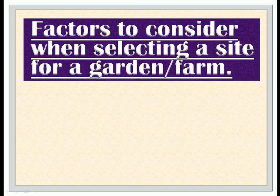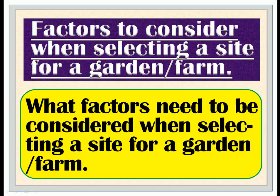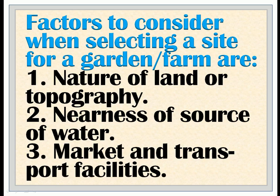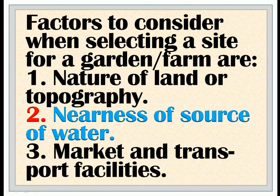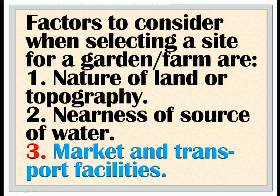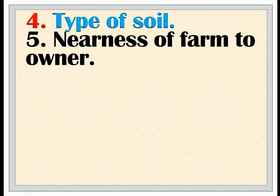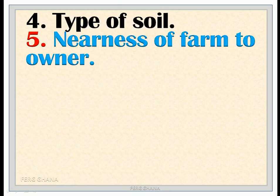Factors to consider when selecting a site for a garden or farm are: 1. Nature of land or topography; 2. Nearness of source of water; 3. Market and transport facilities; 4. Type of soil; 5. Nearness of farm to owner.